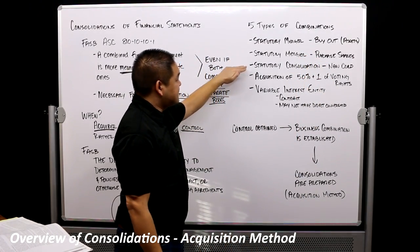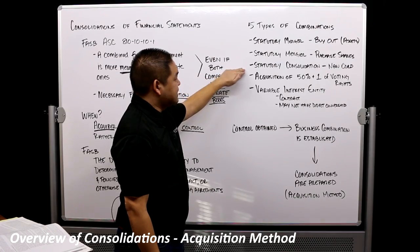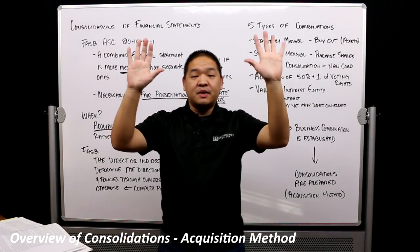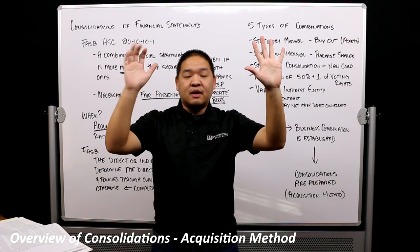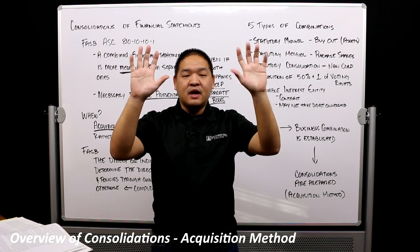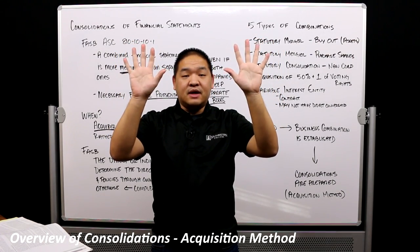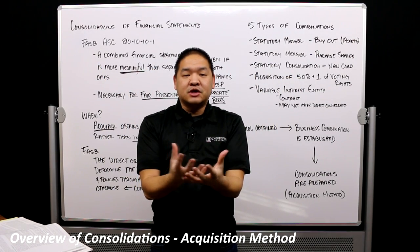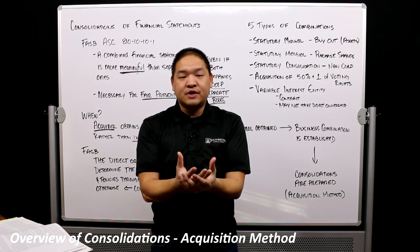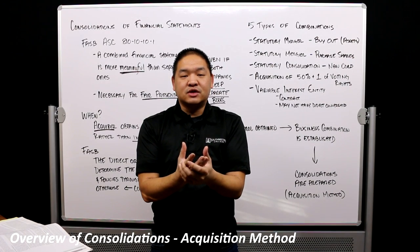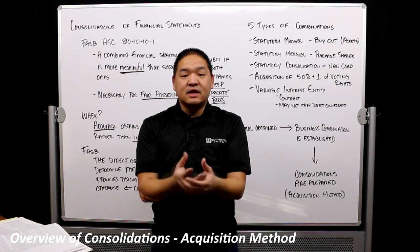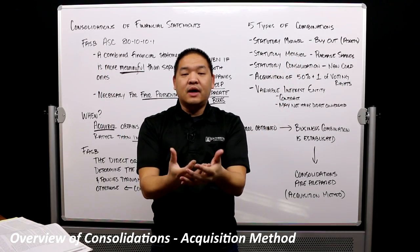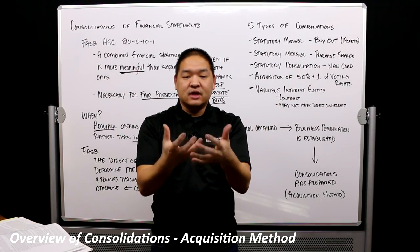The third type is the statutory consolidation. Company A and Company B — Company A decides to acquire Company B, and both A and B dissolve and form a new corporation, Corporation C. So statutory consolidation means both companies dissolve and form a brand new corporation together.